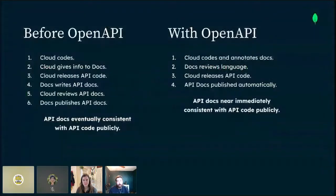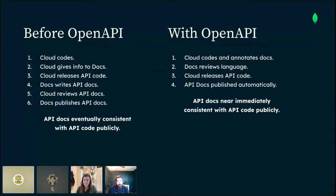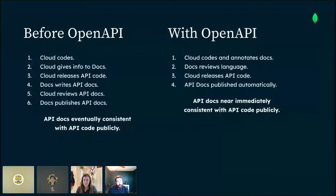This slide briefly describes our API documentation process before we began this project. We often went back to engineers several times when documenting a new feature to gather more information. The docs sometimes lagged behind releases with tight deadlines. Sometimes new APIs were released without the docs team knowing about them. It's really difficult for people to use an API without documentation. We wanted to ensure that docs were immediately consistent with the code we released.